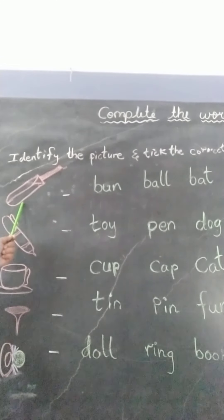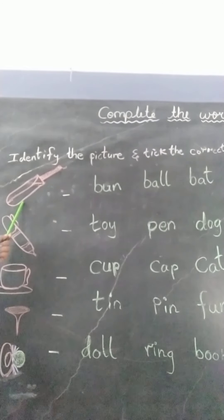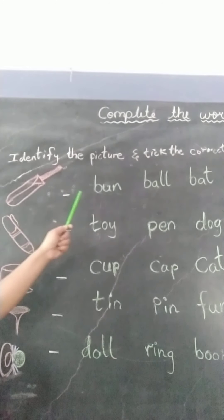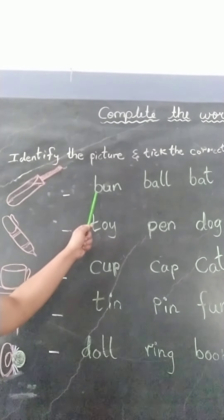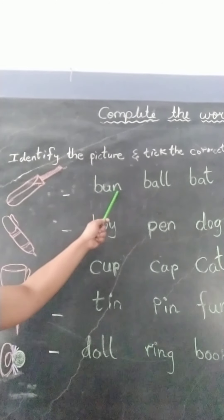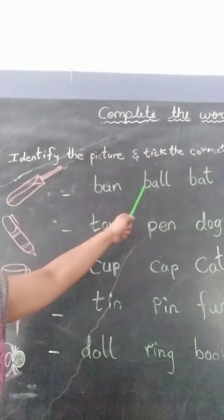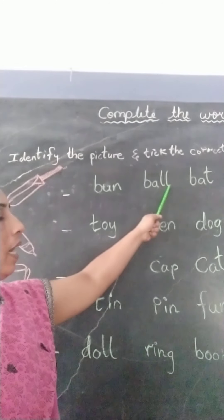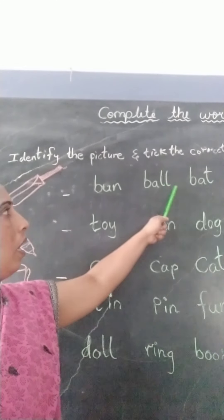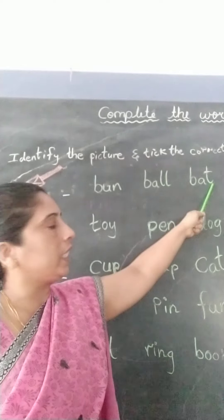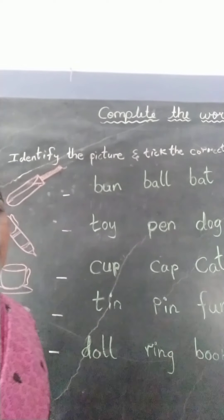This is the picture of a bat, cricket bat. Now let us see the words. What words are there? This is B-U-N, bun. B-A-L-L, ball. B-A-T, bat.